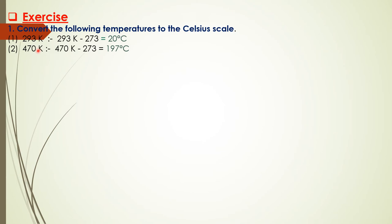Now let's come to chapter exercises. Question 1: Convert the following temperatures to the Celsius scale. First, 293 Kelvin—we subtract 273, so the answer is 20 degrees Celsius. Second, 470 Kelvin—subtract 273, the answer is 197 degrees Celsius.